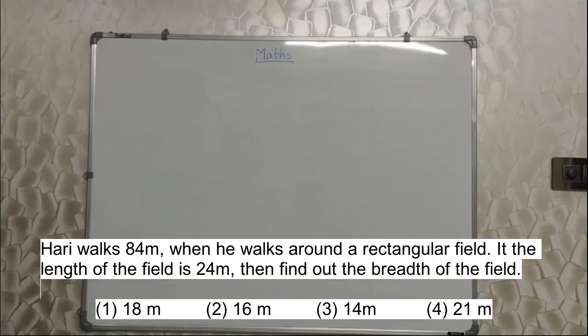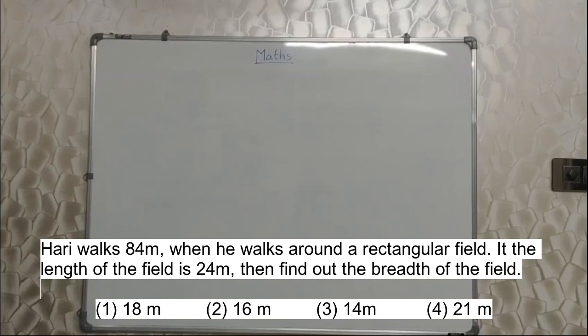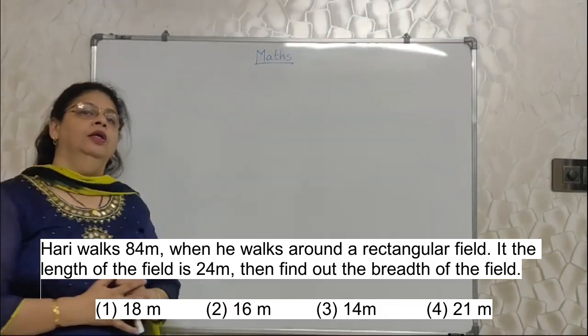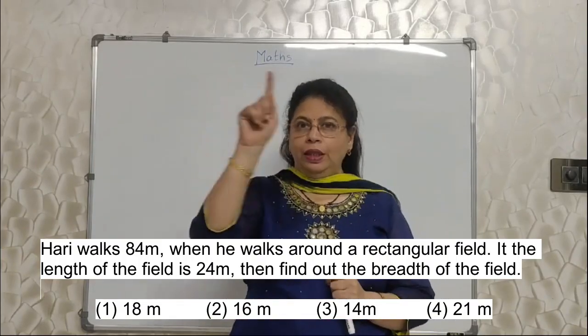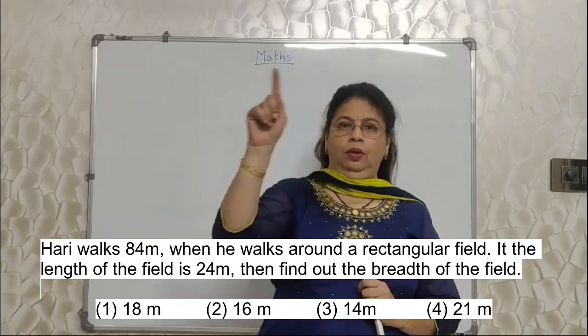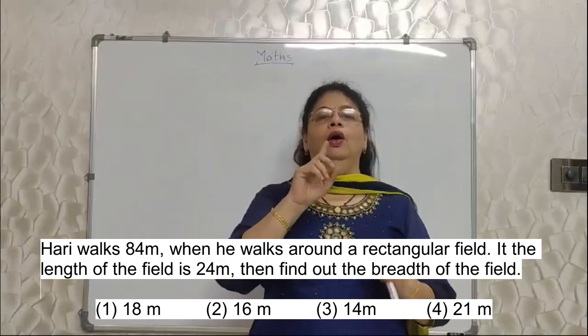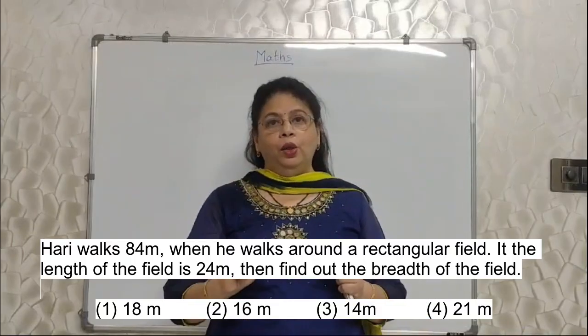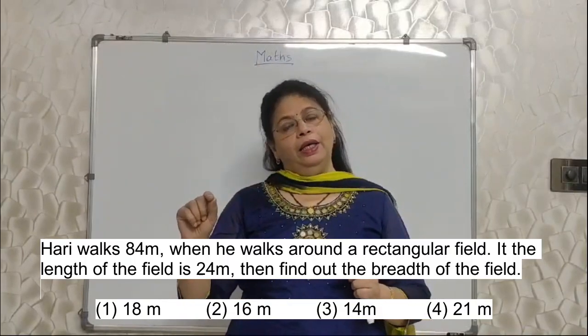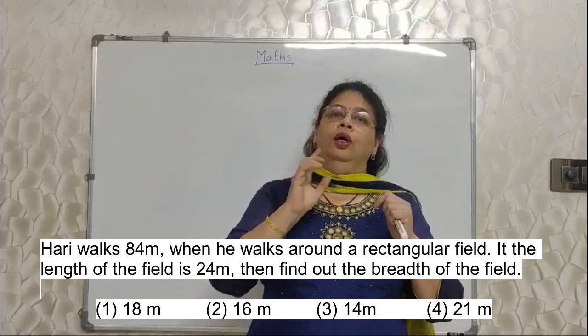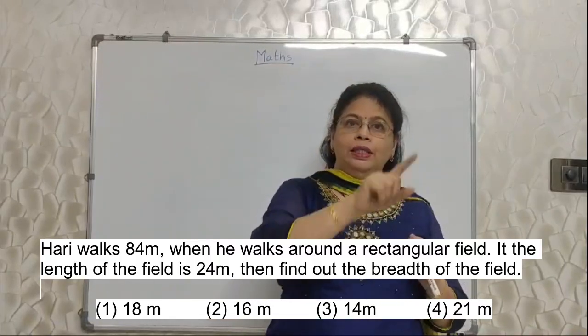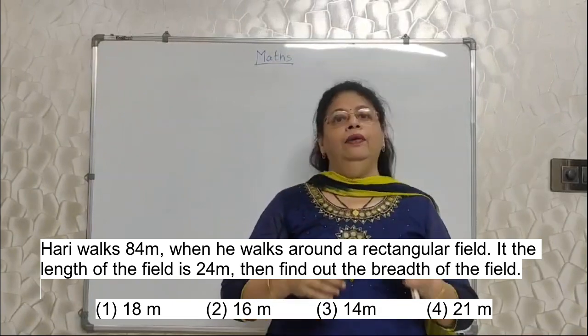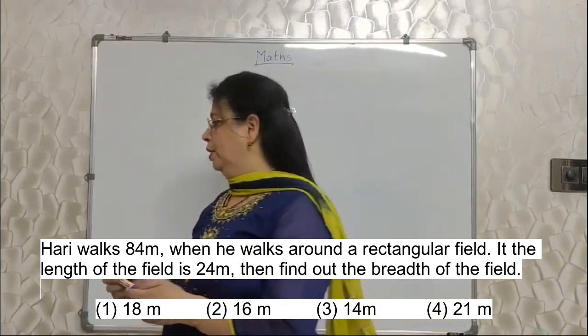Students, here is the next sum. Hari walks 84 meter when he walks around a rectangular field. If the length of the field is 24 meter, find out its breadth. See students, you know by now, one round around anything - circular or rectangular or square, triangle, whatever it is - that is equal to the perimeter. And in case of circle it is circumference. So addition of all these sides is perimeter, and which is same as one round. Let's do it.